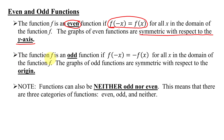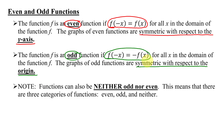The function f is an odd function if f of negative x equals negative f of x for all x in the domain of the function f. The graphs of odd functions are symmetric with respect to the origin. This expression means if I replace every x in the original function with negative x, I get the opposite of my original function. Functions can also be neither odd nor even, so there are three categories: even, odd, and neither.